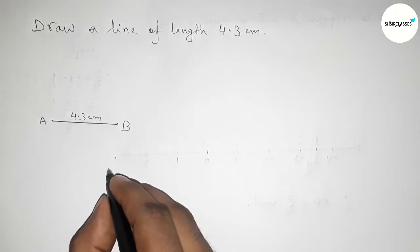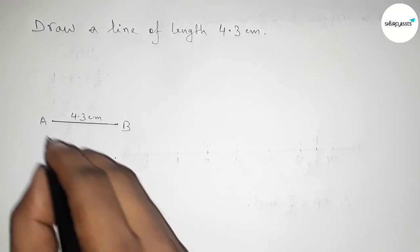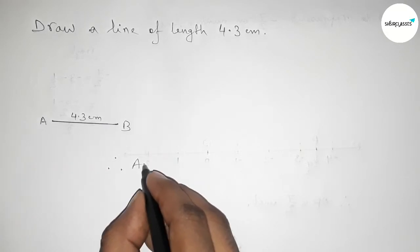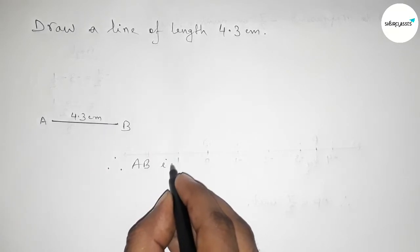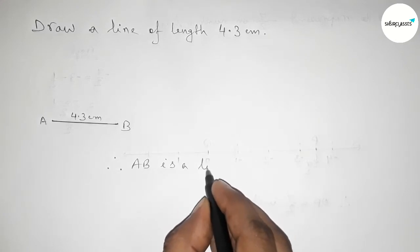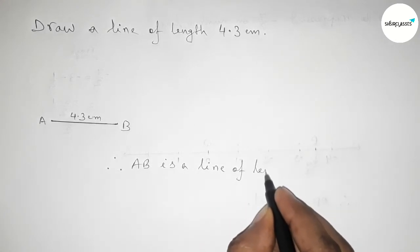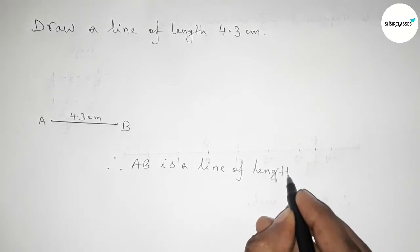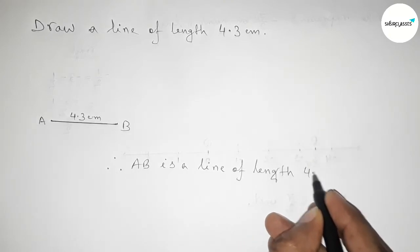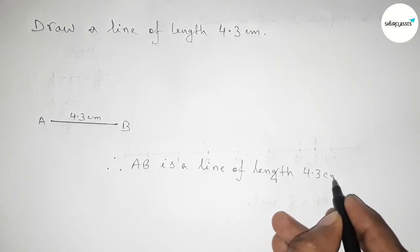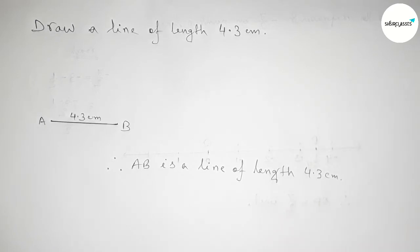Therefore, AB is a line of length 4.3 centimeters. By this way, you can draw a line of length 4.3 centimeters in an easy way. That's all, thanks for watching. If this video is helpful to you, please share it with your friends. Thanks for watching.